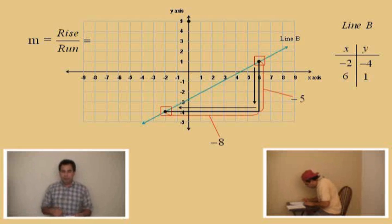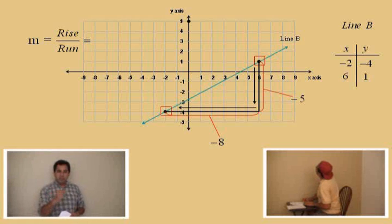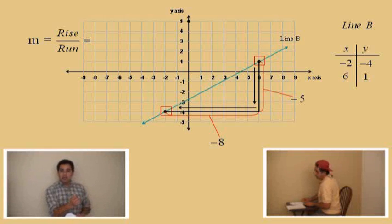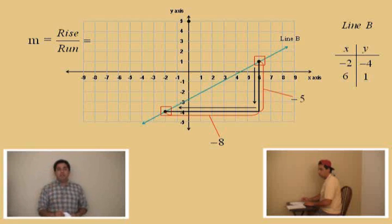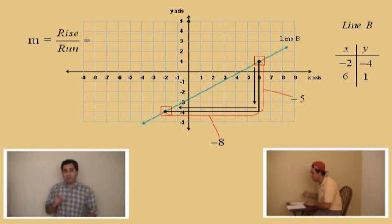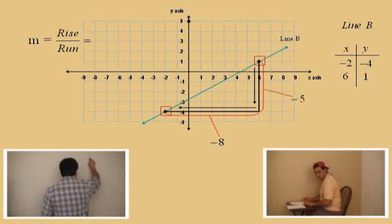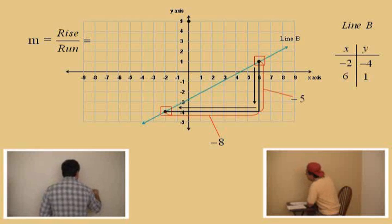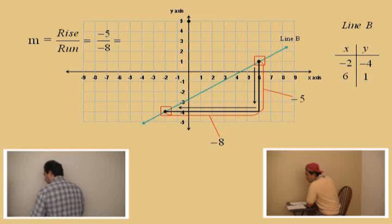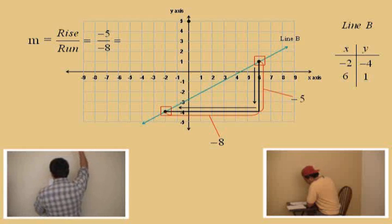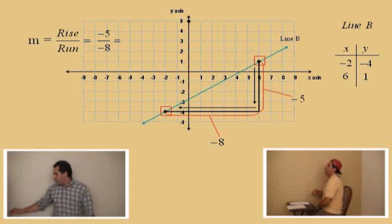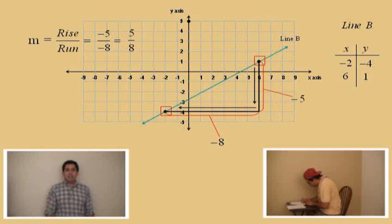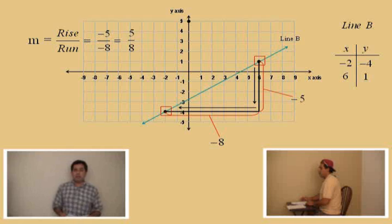Remember: if you're moving on the x-axis to the right, that's a positive run; if you're moving to the left, that's a negative run. When going vertically, if you go up that is a positive rise, and if you're coming down that is a negative rise. So here we have a negative rise — negative five — and a negative run — negative eight. Our rise over run is negative five over negative eight. And a negative divided by a negative is a positive. So there we go — our positive five-eighths slope.